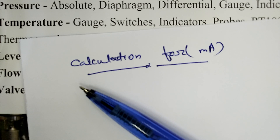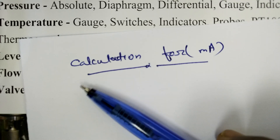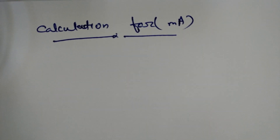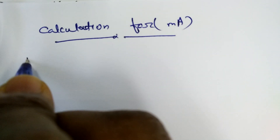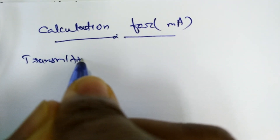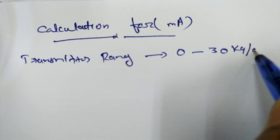I am going to tell you about that equation. If we are using 4 to 20 mA, I will show you how to use this equation. The range we are working with is 0 to 30 kg per cm².